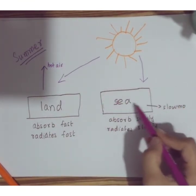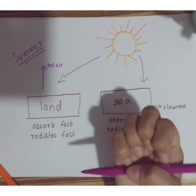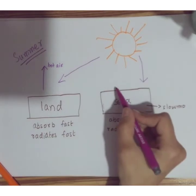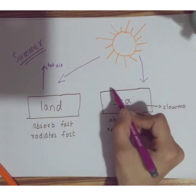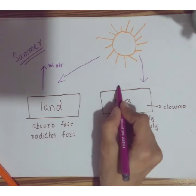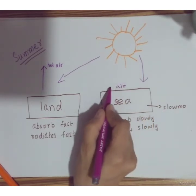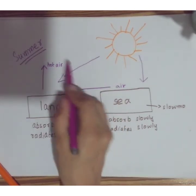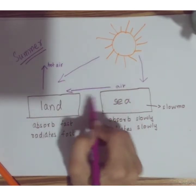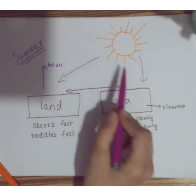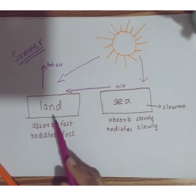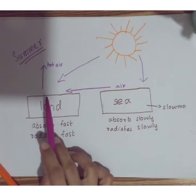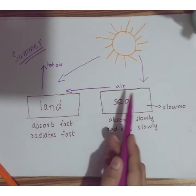The sea, on the other hand, absorbs heat very slowly, so the air over it is cooler and stays closer to the surface. This cooler air moves towards the land, while the hot air above the land moves towards the sea — a circulation begins. This effect balances the temperature, keeping it moderate and preventing the coastal land from becoming very hot, because cooler air from the sea is continuously moving towards the land.